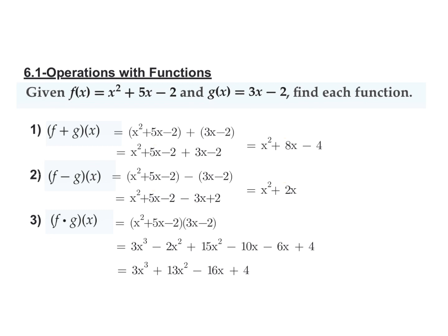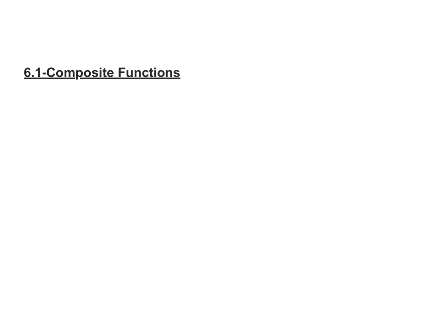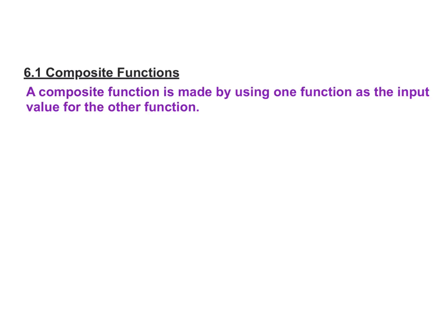The second part of this lesson is composite functions. And a composite function is made by using one function as the input value for the other function. So we have evaluated functions in many different ways already this year where we've found like f of 2 and then we plug 2 in for x everywhere. A composite function now, instead of plugging a number in or just one single variable in, we're going to plug an entire other function in as the input value. And that's, we call that a composite function.